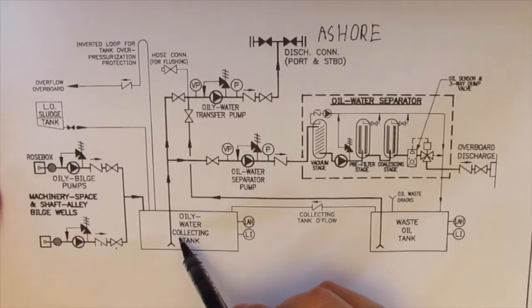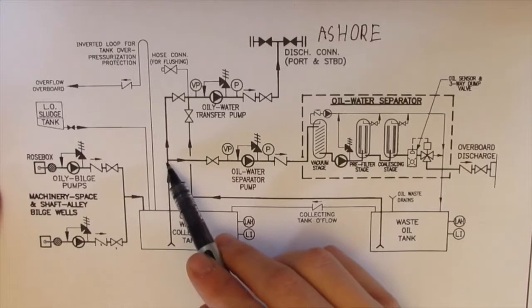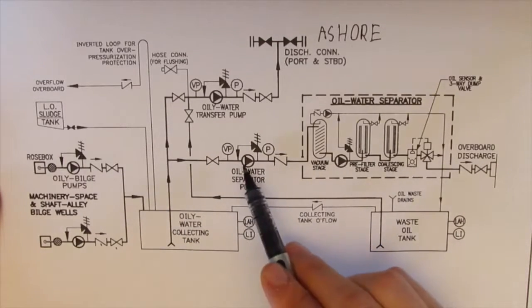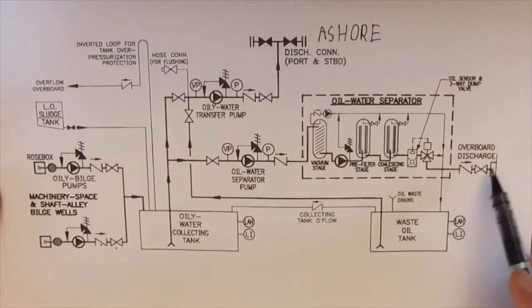Should the vessel be denied this option, however, the bilge water flows through the oily water separator, which contains three stages.